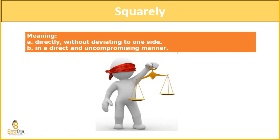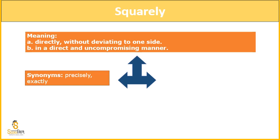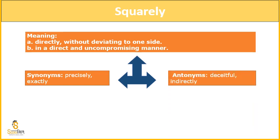If the justice system is unbiased and uncompromising, it is possible only if the judge is giving a decision without personally benefiting from it — then only we can say it is in an uncompromising manner. Synonyms for squarely are 'precisely' and 'exactly' — like precise and exact, only on this basis, not with personal benefit. Antonyms are 'deceitful' and 'indirectly' — false evidence, or not being direct in the decision.